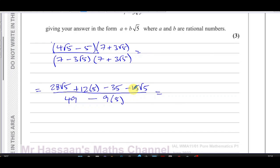So you have 28 root 5. In fact, let's do the whole number part first, the part without the surd first, because that's how it's written. So we've got 12 times 5, which is 60. 60 minus 35, which is 25. Then we have 28 root 5 minus 15 root 5, which is plus 13 root 5, divided by 49 minus 45, which is 4. So we're left with 25 over 4 plus 13 over 4 root 5. And that is the answer to the question.